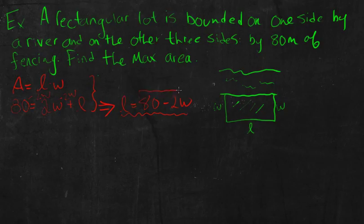So then I'm going to sub that right here for L. So this entire thing right here, 80 minus 2W, is going to go straight back in there for L. Just like that. So area is equal to, and then length times width, so my L is now 80 minus 2W. And then I'll times by W, just like that.